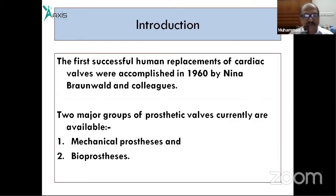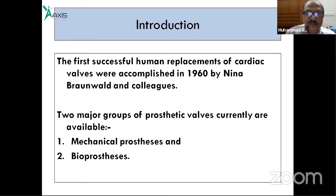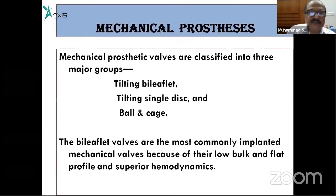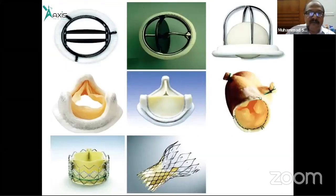Mechanical prosthesis includes ball-and-cage, single tilting disc, and bileaflet designs. Bioprosthesis includes tissue valves. Both types are available for valve replacement, and each has distinct characteristics.